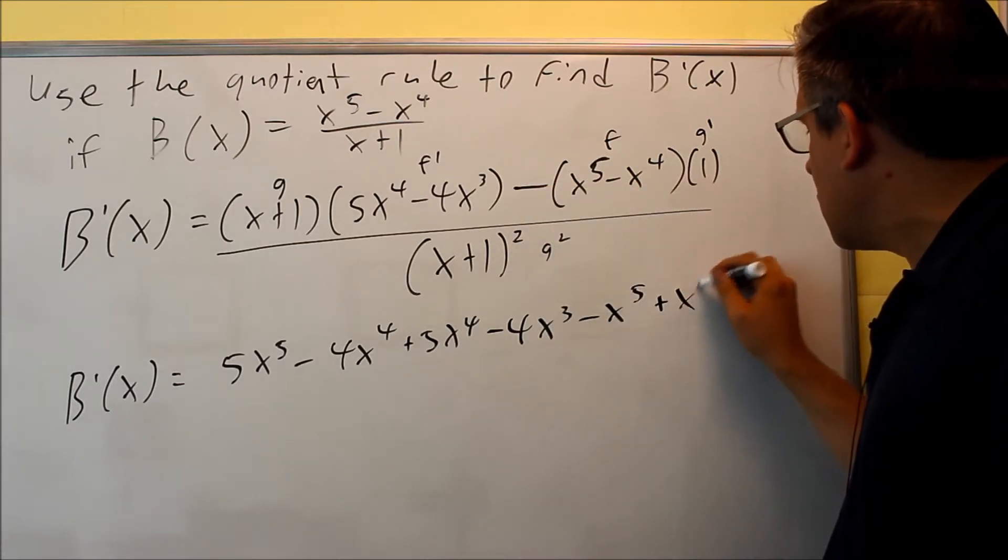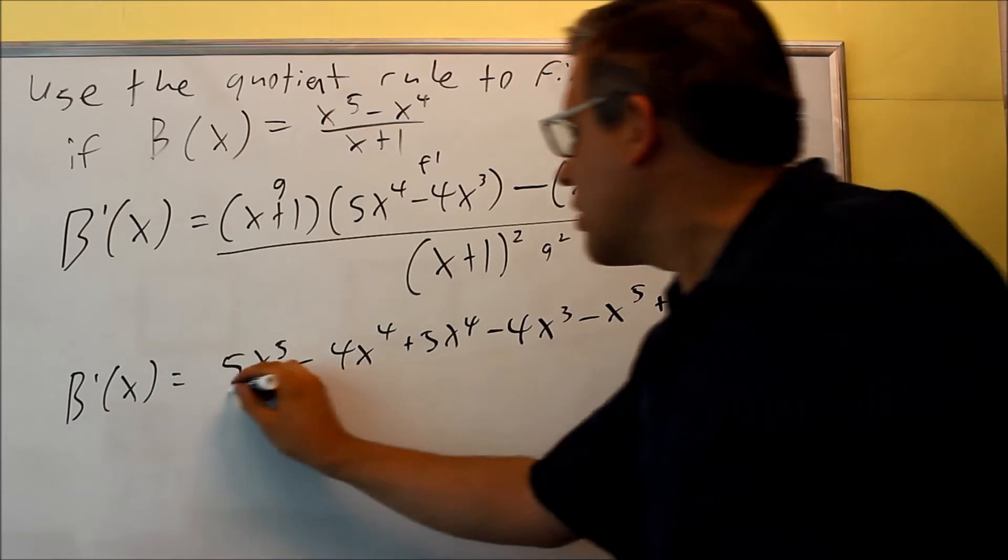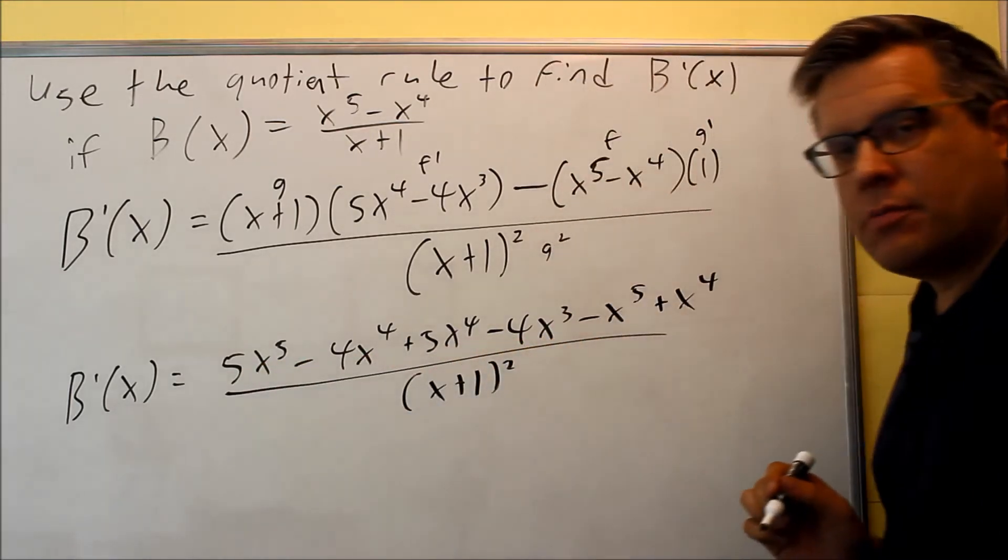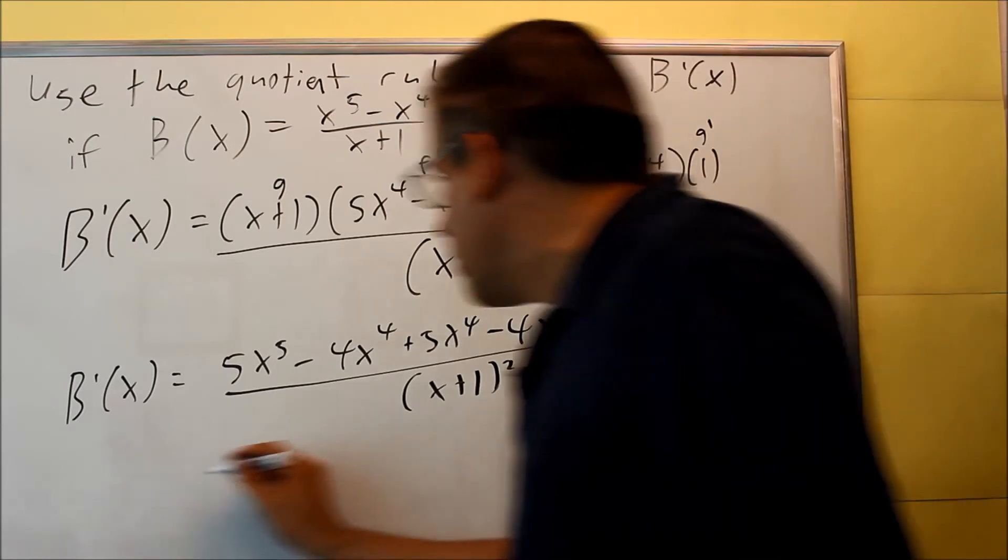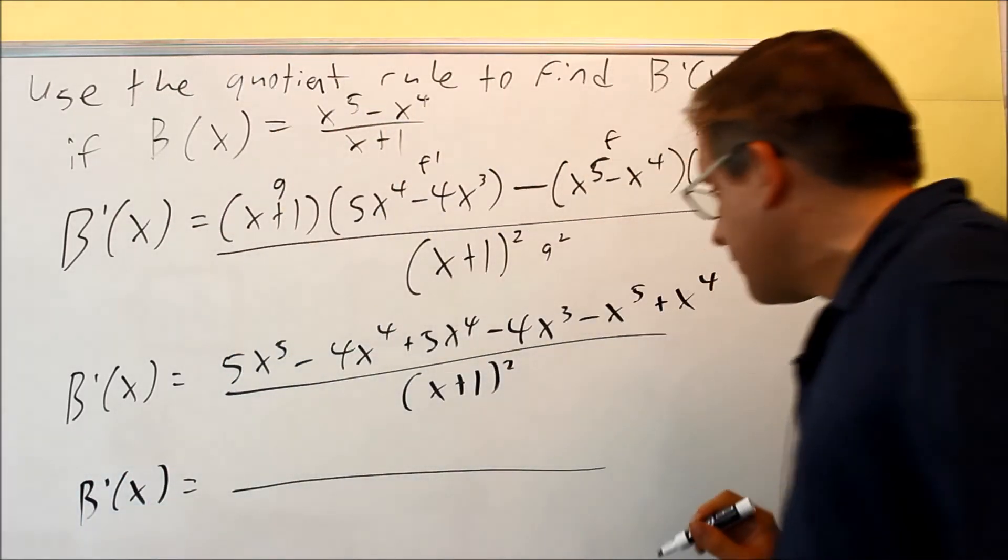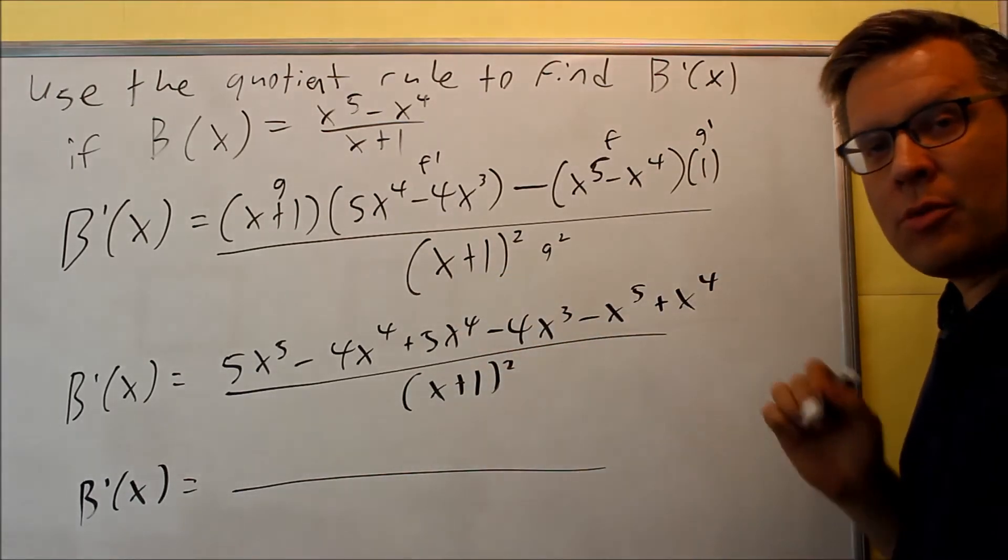Minus, this is plus. So, be careful about that sign change there. All this is going to be written over the bottom squared. The last thing that we'll do is we're just going to combine all the like terms together on top. And that will be our final answer.